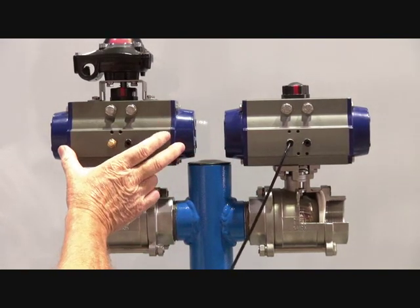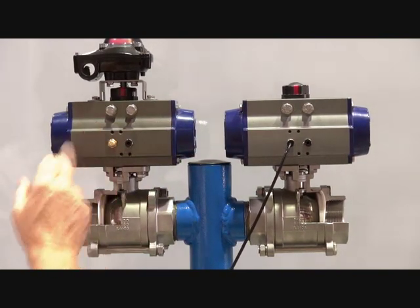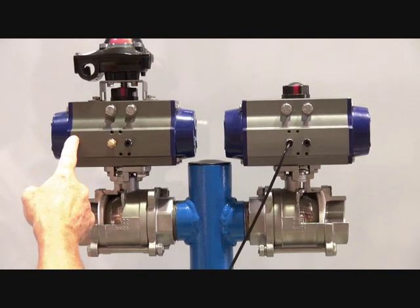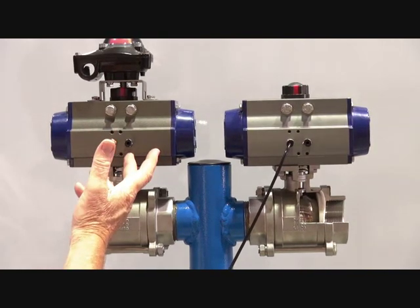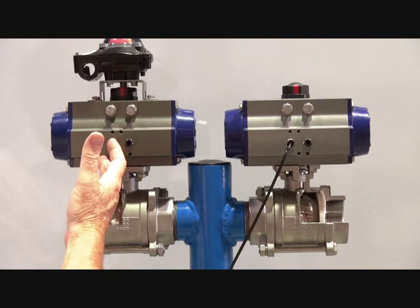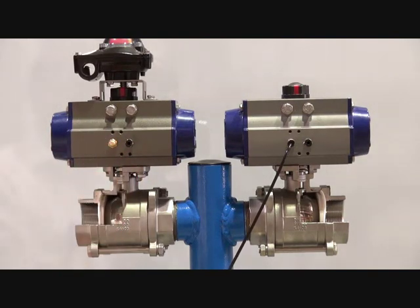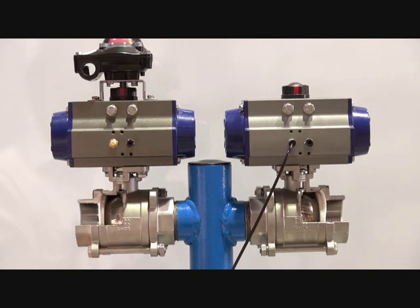Single acting actuator is in fact the double acting actuator with springs. So you can put the air into the spring end as well. It won't affect it. It just assists the spring to close. But the spring is still there to give it the close function or the return function in the case of an air supply or electrical failure.